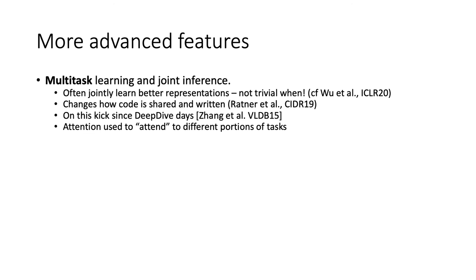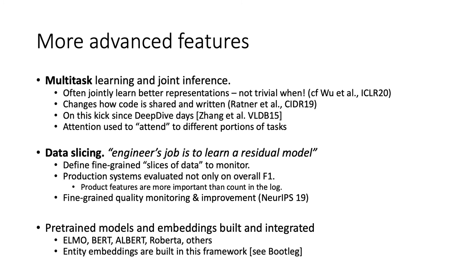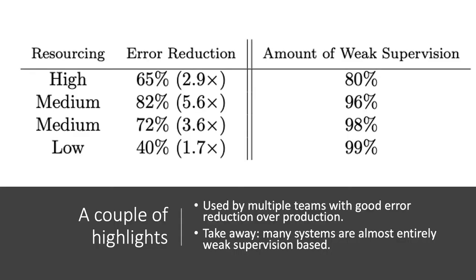There are more advanced features. Multitask learning: we've been on this kick since the deep-dive days and have some very nice recent theory to explain when it works and when it doesn't. Alex also talked about how it changes software engineering at CIDR 2019. Data slicing is a nice idea from NeurIPS last year that frames the engineer's problem as learning a residual model off a main model — an engineer refining their model for a slice of traffic. Pre-trained models are all the rage and are well supported inside the system. Overton was also used to train pre-trained embeddings. The big objection with such a high-level abstraction is quality, and the teams that took a risk did the really interesting work on this project.